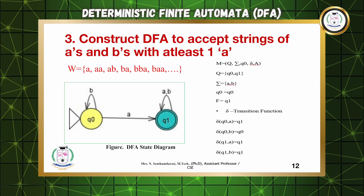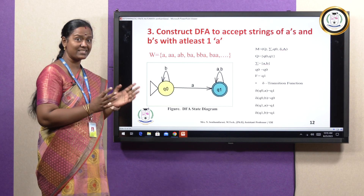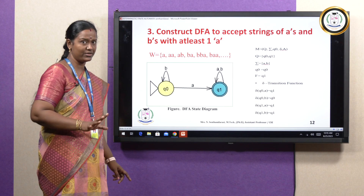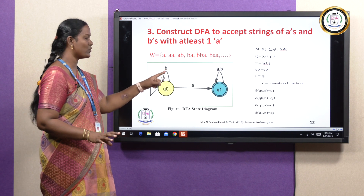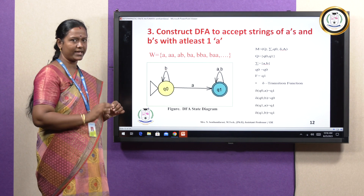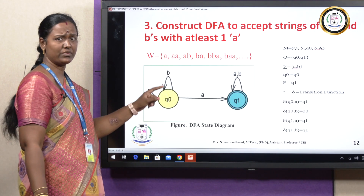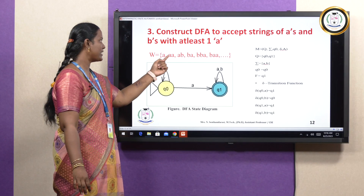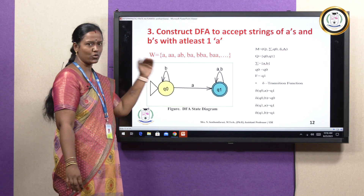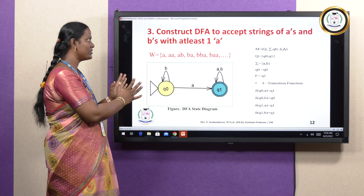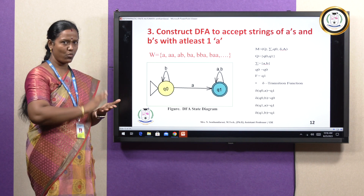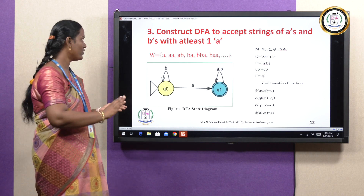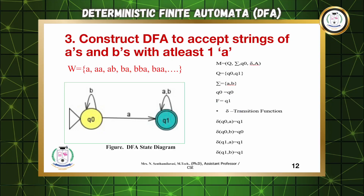The third problem: construct a DFA to accept strings of A's and B's with at least one A. The difference from the previous problem is that here we can have one A or more than one A. So accepted strings include: A, AA, AB, BA, BBA, and so on — any combination with at least one A.